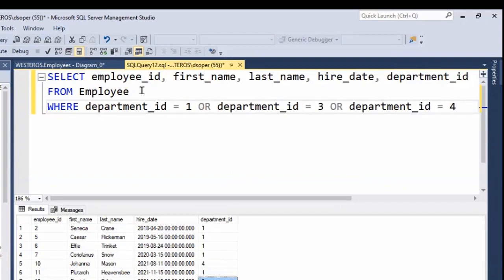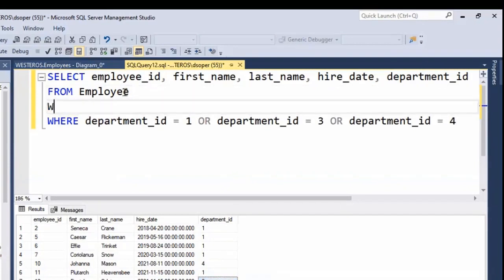So instead of doing that, let's build a different WHERE clause using what we just learned about the IN keyword. So I use the IN keyword and then I specify inside parentheses a comma separated list of acceptable values. In this case it's going to be 1, 3, or 4, right?